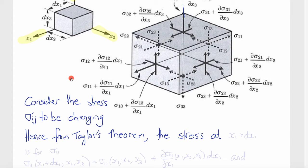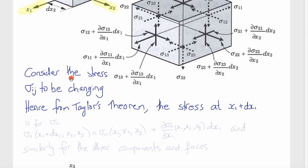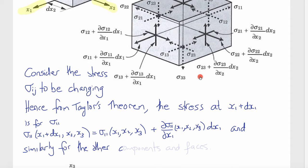So let's just start by demonstrating that. Consider the stress σij to be changing continuously. And hence, from Taylor's theorem and truncating after the first derivative term, the stress at x plus dx1 for the σ11 component will be σ11 at x1 plus dx1, x2, and x3 would equal σ11 at x1, x2, x3, plus ∂σ11/∂x1 times dx1. And we can write a similar expression for all the other components and bases. And so you see them here on this diagram.